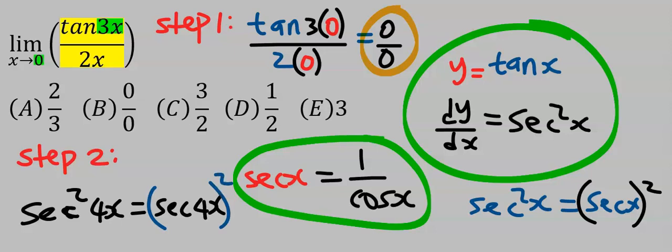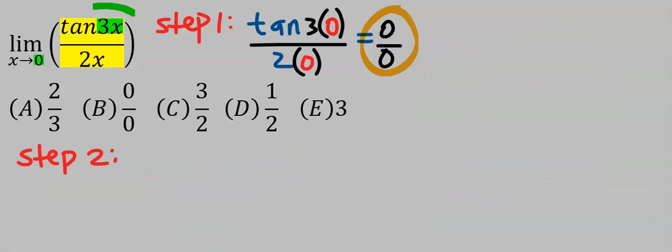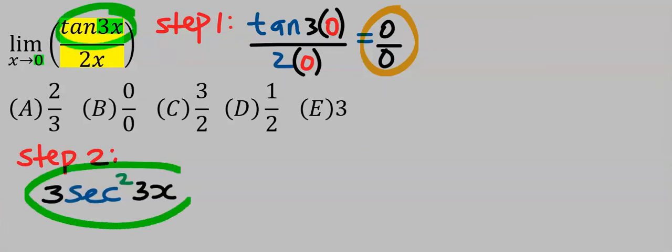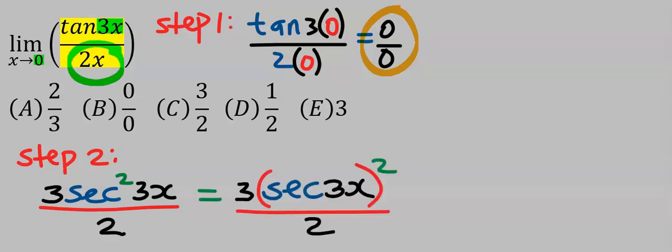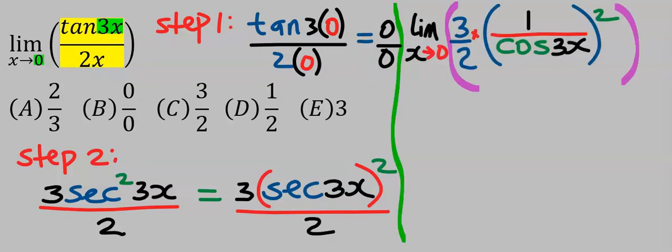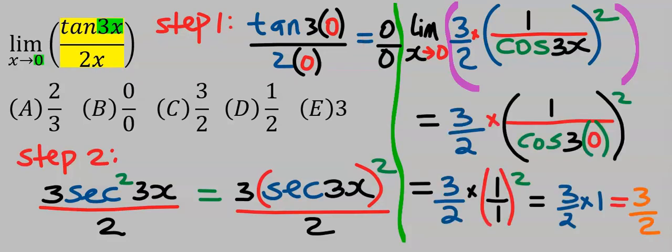With all this in mind, let's continue with step two. Hence, let's differentiate tan 3x and we have 3 sec²3x. Next, let's differentiate 2x and our answer is 2. Next, before you take the limit, rearrange the function.